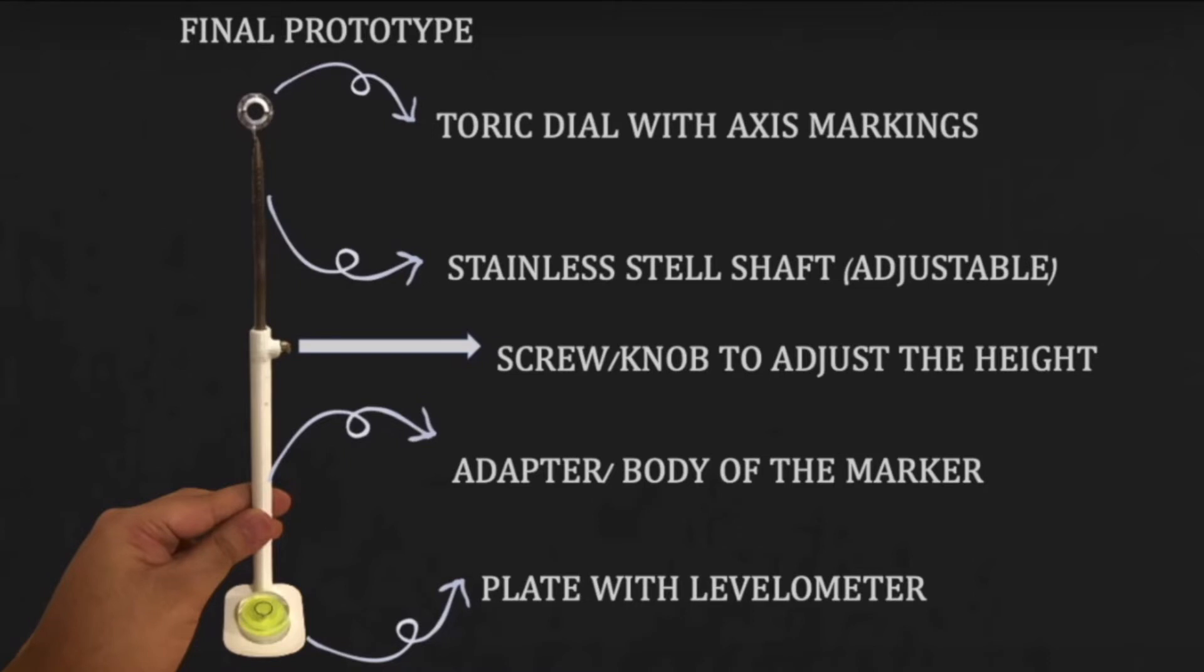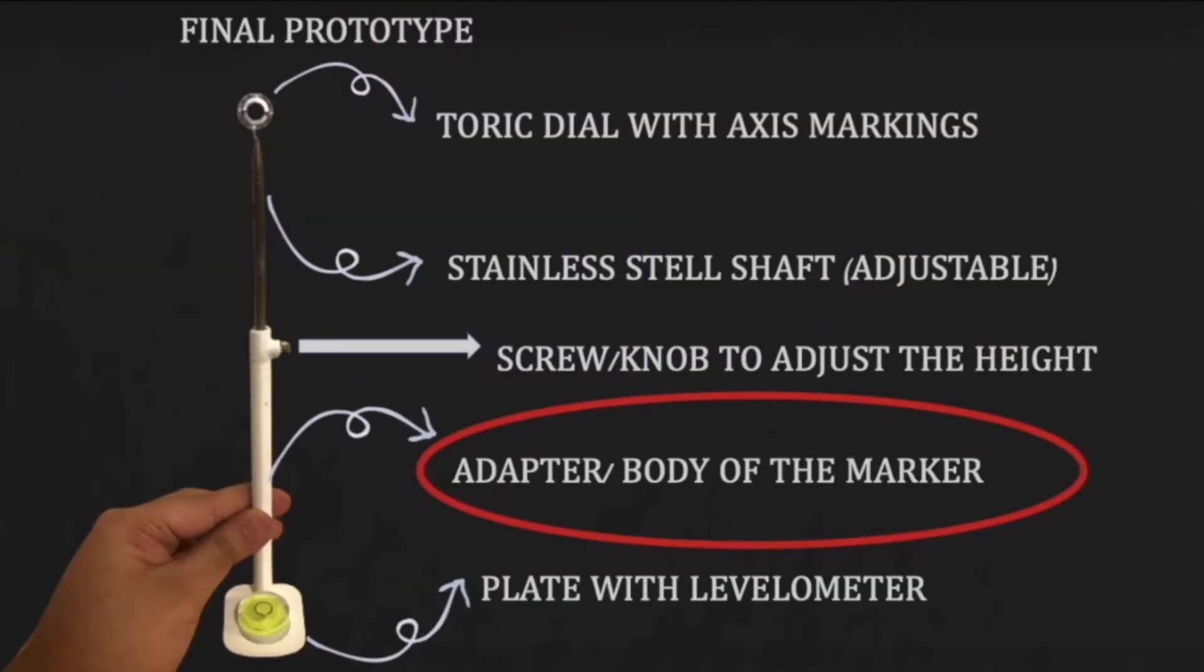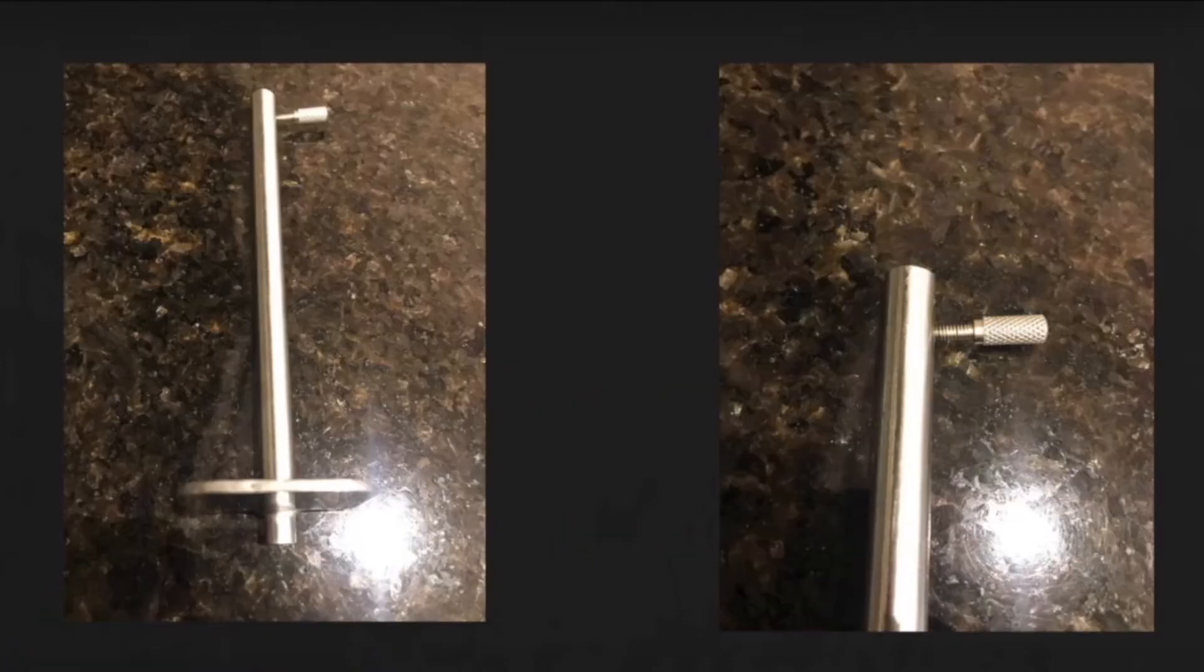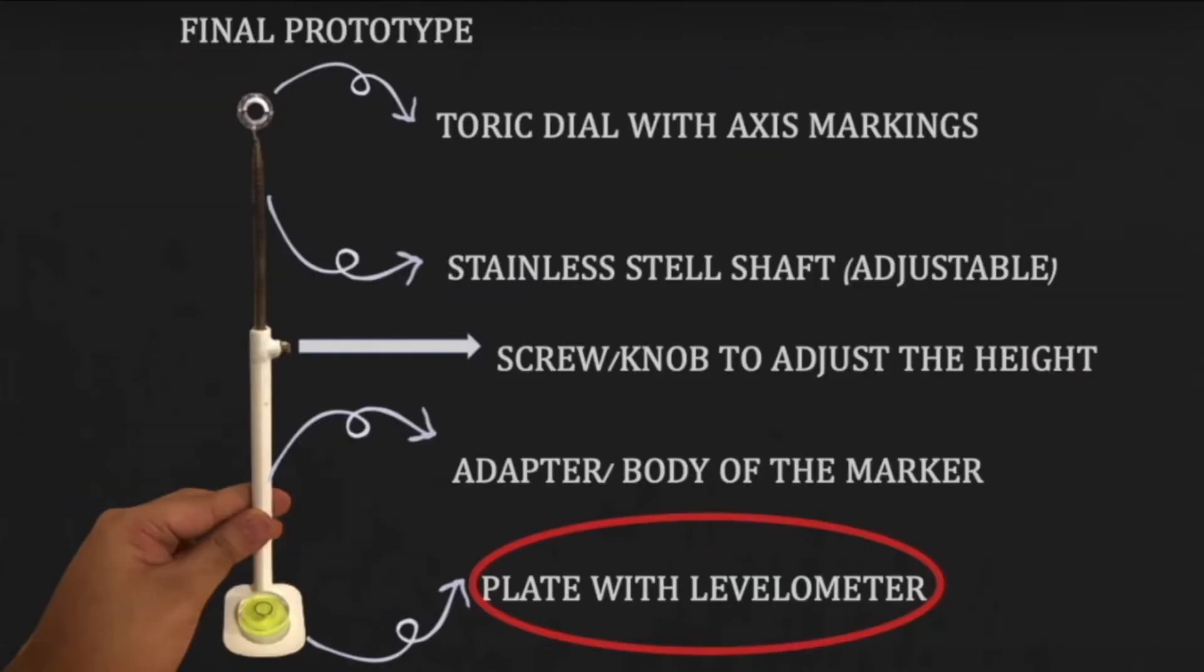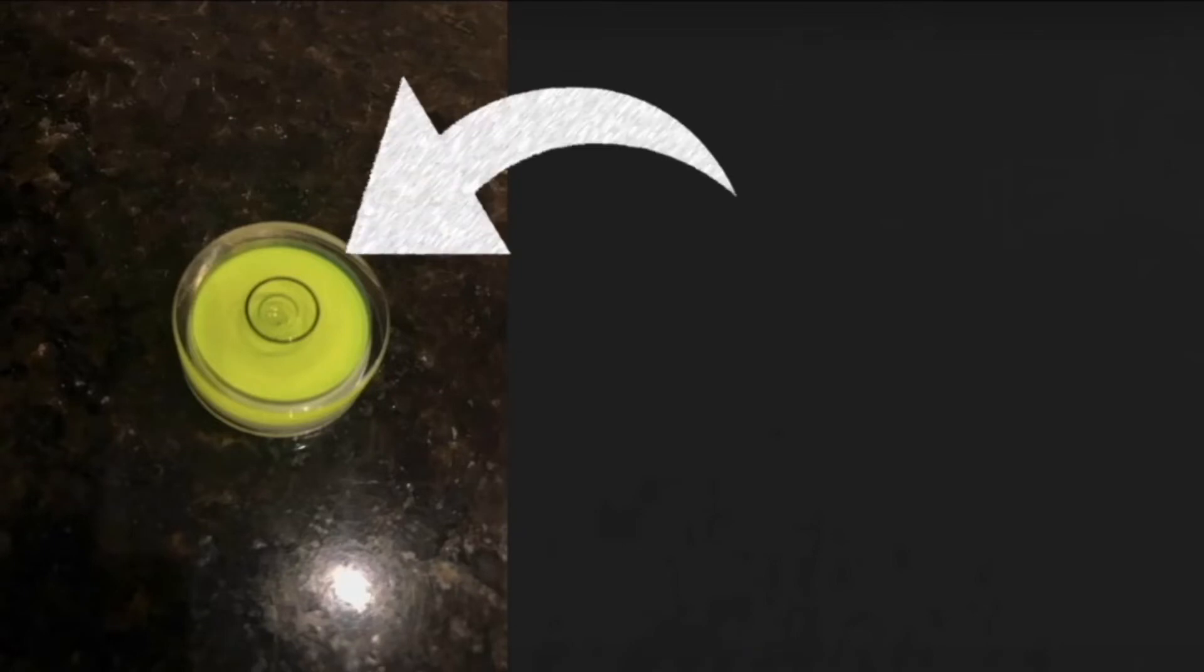Now the final prototype consists of a dial with a shaft made out of stainless steel. The dial is rotatable 360 degrees and has an atraumatic edge. On the other hand, the adapter or the body of the toric marker is along with a plate to accommodate a levelometer called the bullseye levelometer. This bullseye levelometer makes sure that the toric marker is perpendicular to the table of the slit lamp.